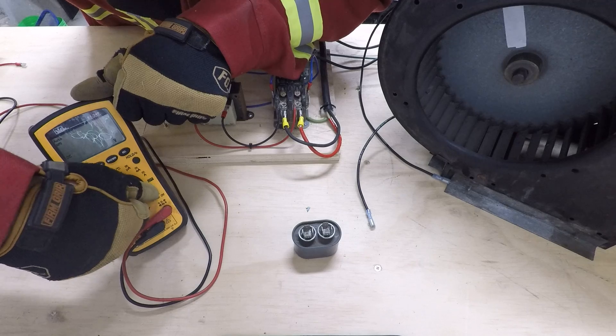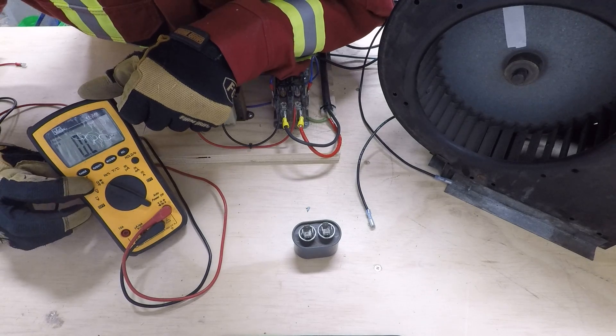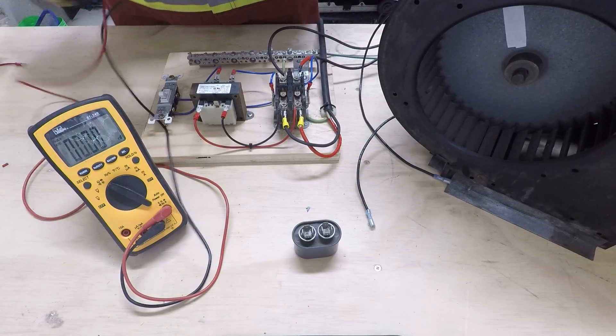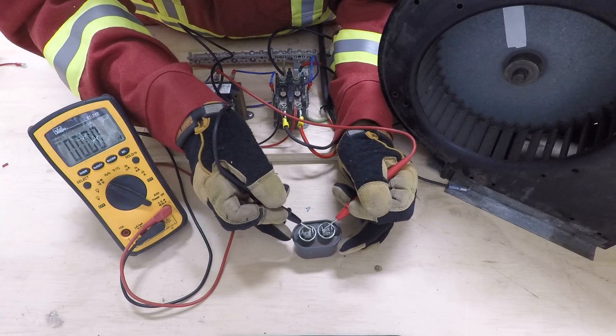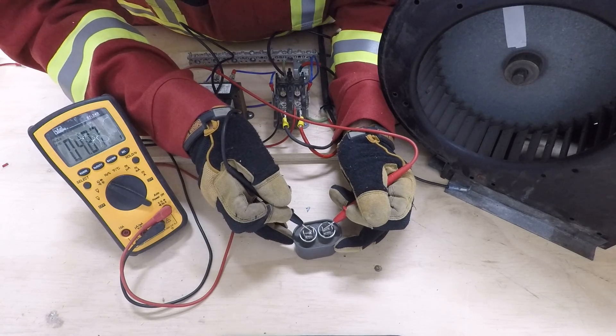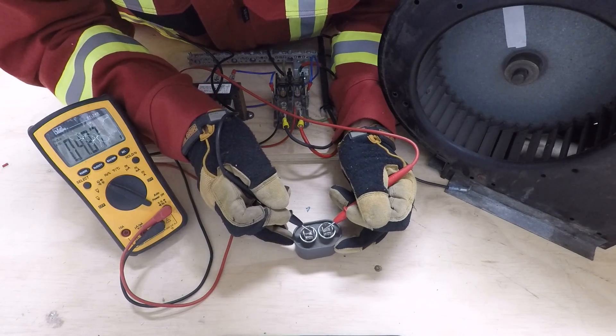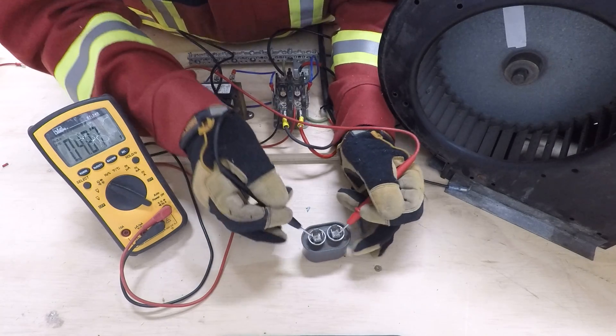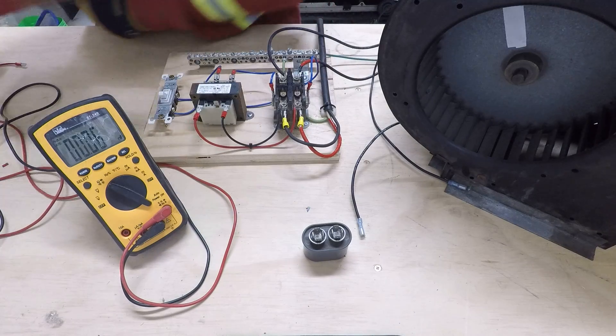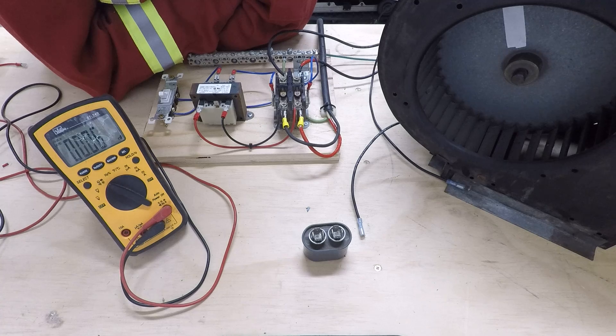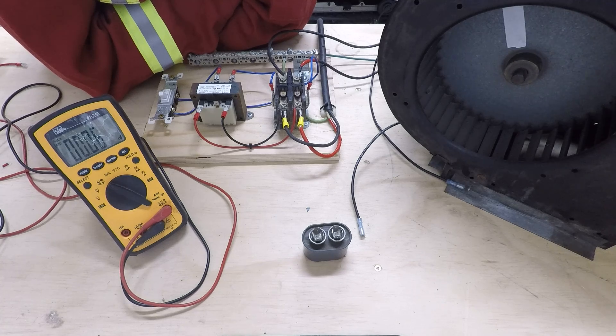What we can do to test this 5 microfarad capacitor is put your multimeter on capacitance. I'm going to hook my leads up to the capacitor, and right there you can see I've got 4.87 microfarads. So that's pretty close to 5. A lot of guys say there's kind of a 10% tolerance on these. If you're outside of that 10% range, then it's probably time to replace the capacitor.